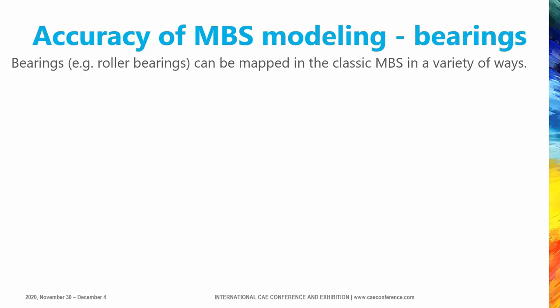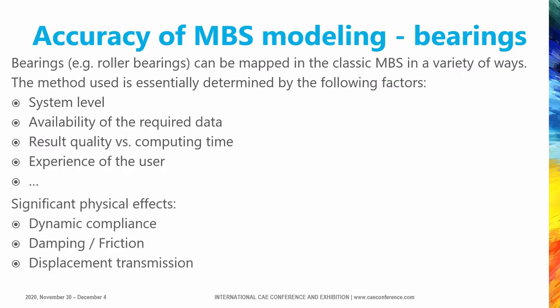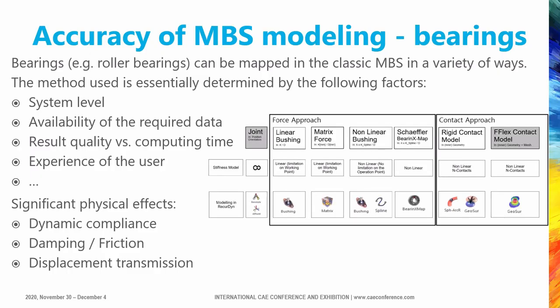The next machine component requiring closer attention is the bearing. The modeling method used depends mainly on the system level, availability of required data, quality of results compared to computing time, and user experience. The significant physical effects needed for NVH simulations are compliance, damping and friction, and displacement transmission. We can separate between joint approaches and force and contact approaches. Due to high simplification, joints are not recommended, and the contact model based on finite element approach is also not suitable due to high solving time.